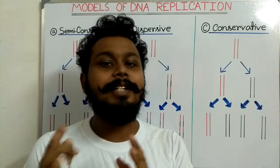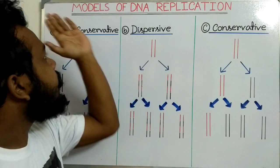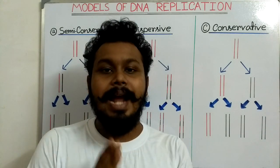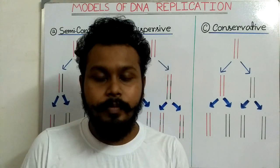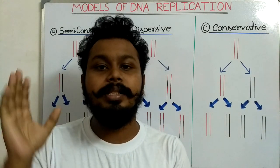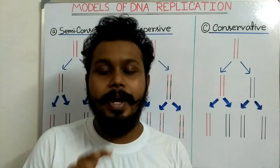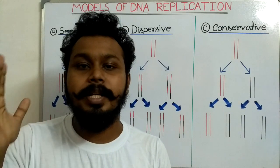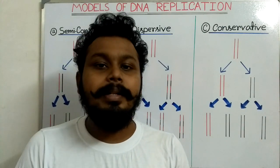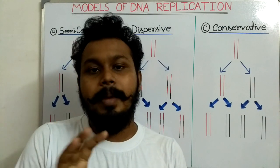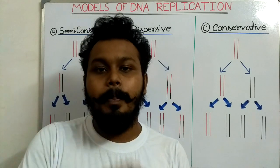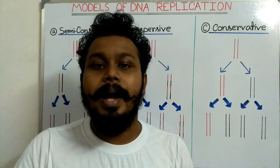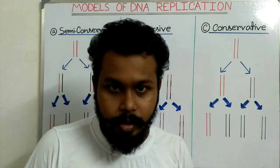All of these things are described by different scientists in their different models. In 1953, when the DNA double helix structure was discovered by Watson and Crick, they also predicted the DNA replication process. They predicted that DNA may be copied by the semi-conservative method.